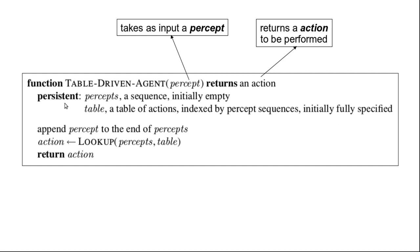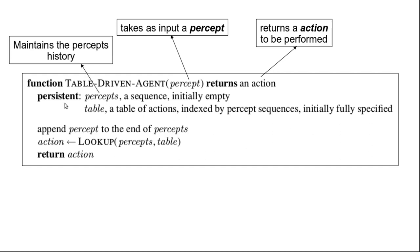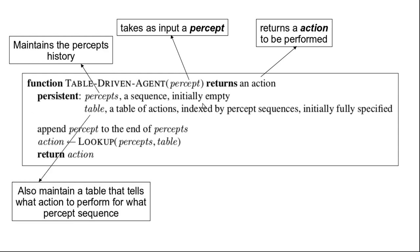If we look inside at how it may be implemented, the agent maintains a history of percepts — the percept sequence — seen up to that point in time. As time progresses, the table-driven agent keeps building this history of percepts. Initially it will be an empty list. Moreover, this agent also maintains a lookup table that tells the agent what action needs to be performed.